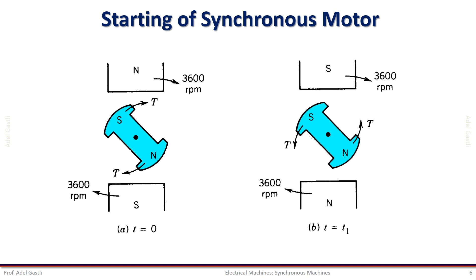But since the stator flux is much faster, after a certain time T1 the polarity of the stator dipoles will change and we will have a situation where poles of the same polarity will repulse each other, creating an opposite torque on the rotor which tends to rotate anti-clockwise. Therefore the rotor will not be able to start but instead it will vibrate in the same standstill position.